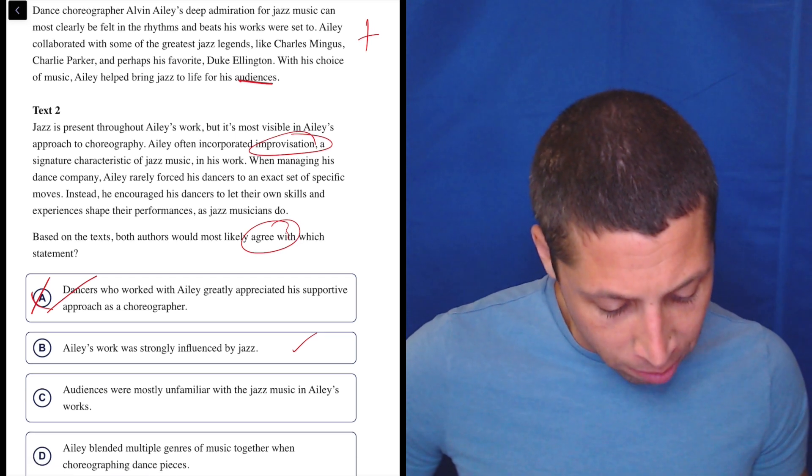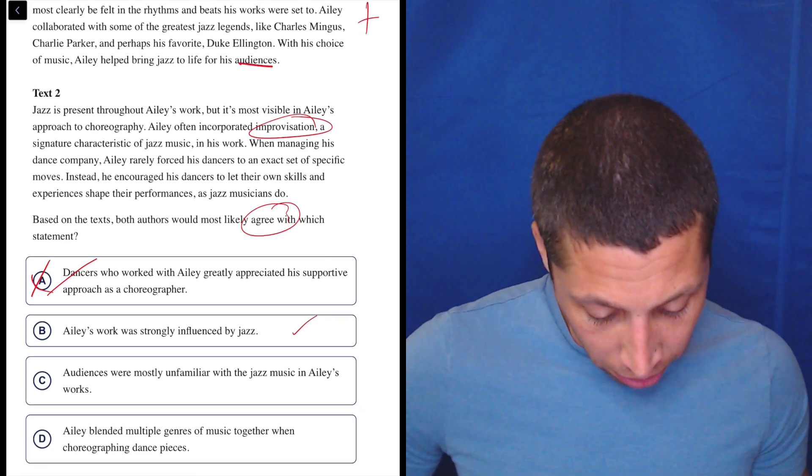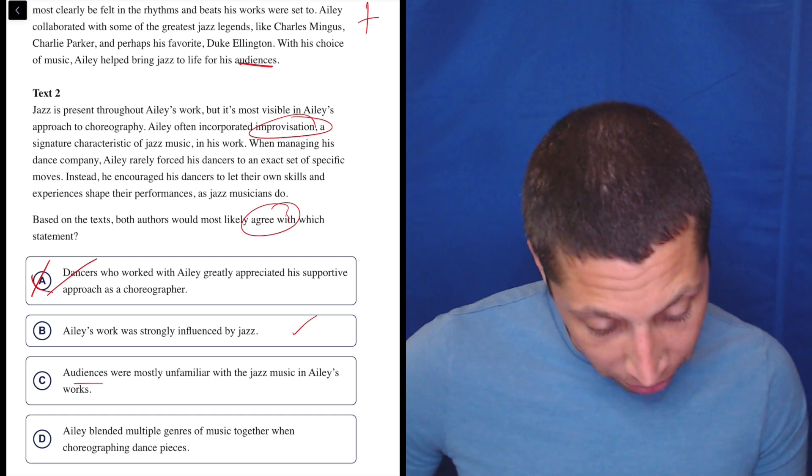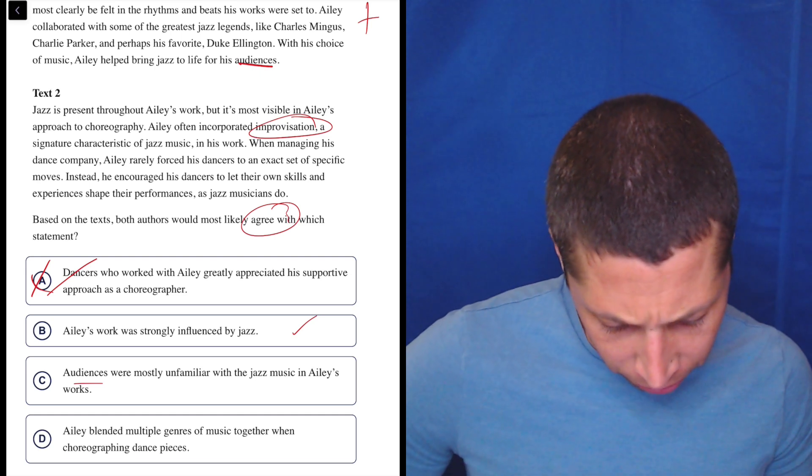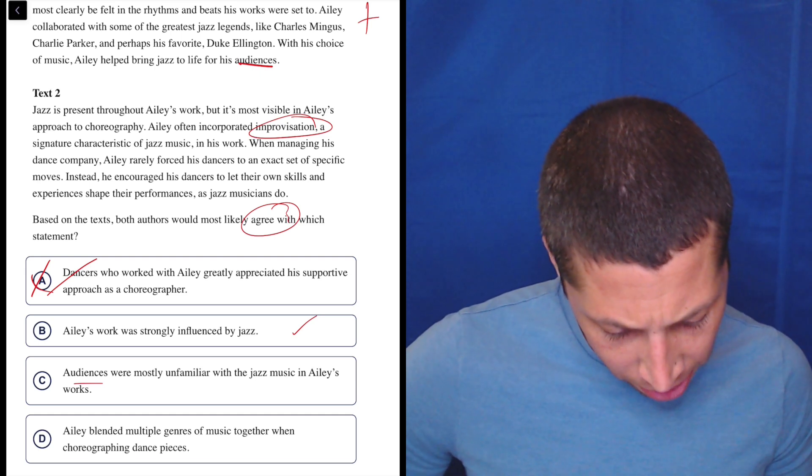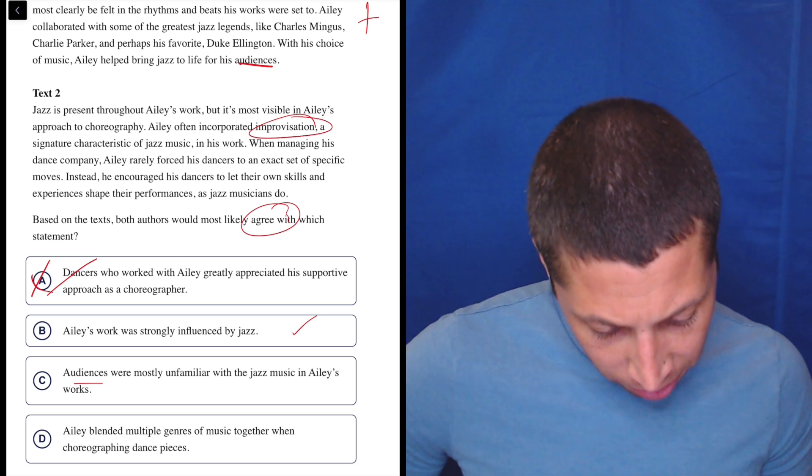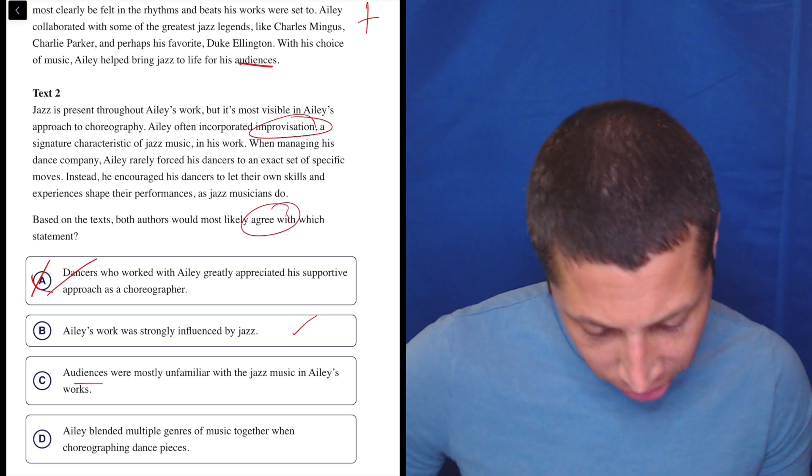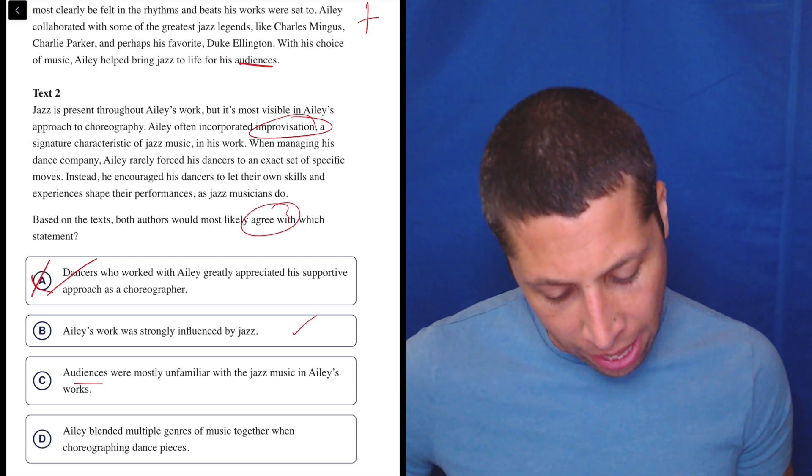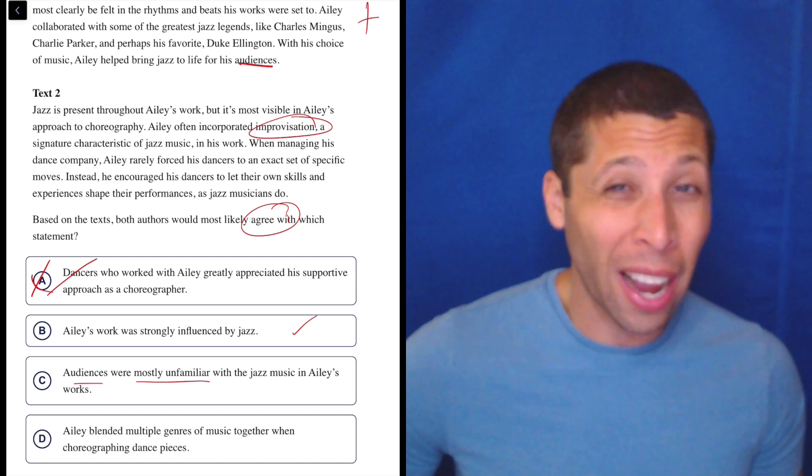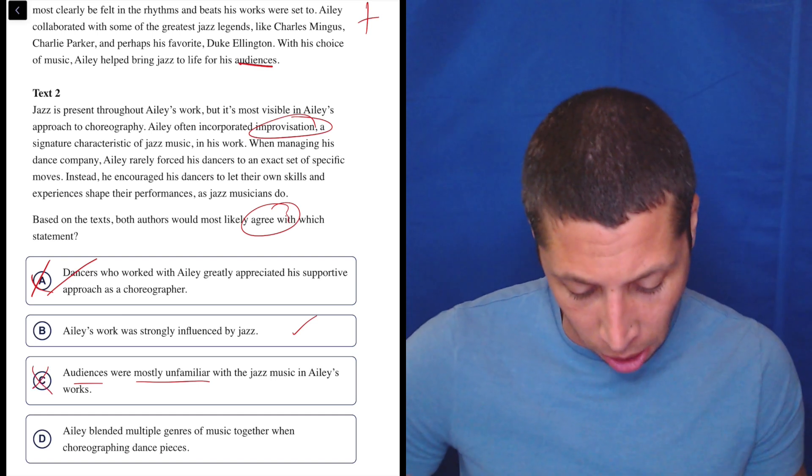C: audiences were mostly unfamiliar with the jazz music in Ailey's works. I don't know what the audiences thought. They're not really mentioned in the second passage. Yeah, that's more about the dancers, so this is kind of the opposite problem as choice A. And again, mostly unfamiliar - I don't know what they thought, so this just seems wrong.